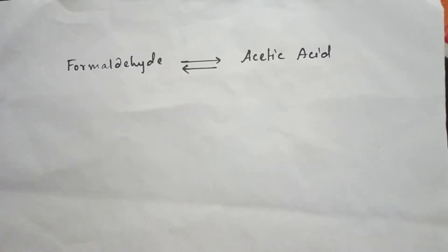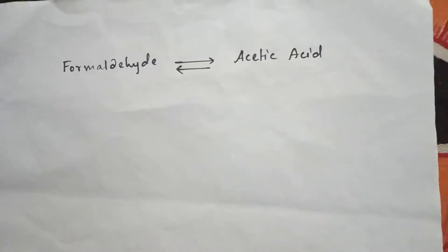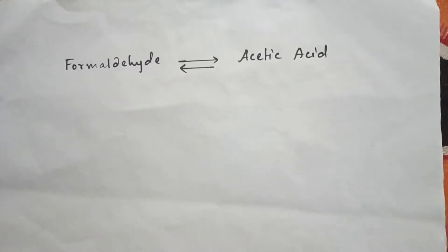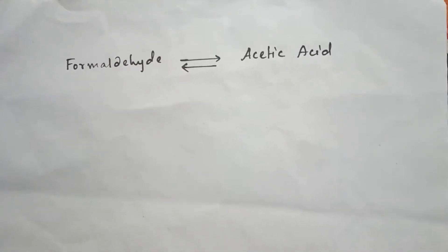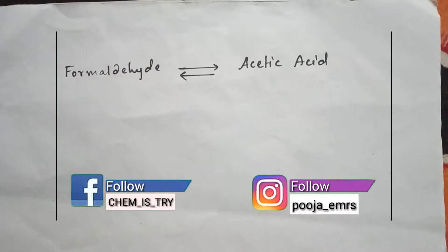Today we will know the process of conversion from formaldehyde to acetic acid and also the reverse process, that is from acetic acid to formaldehyde. So let's start.